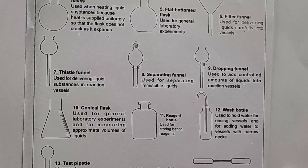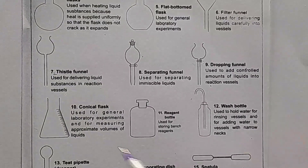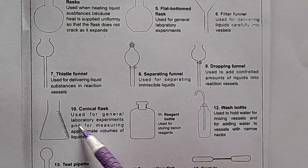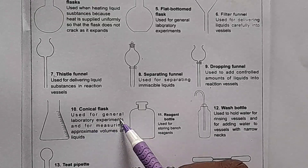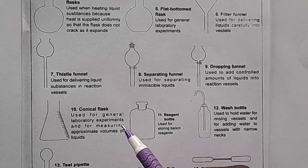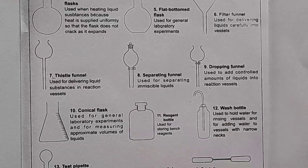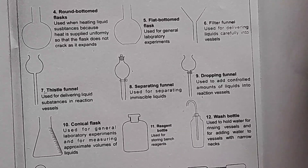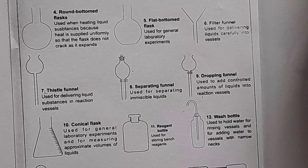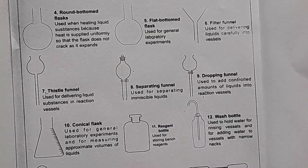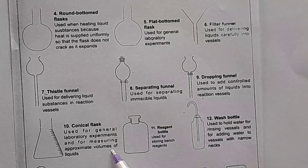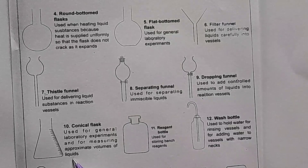Number ten, we are dealing with a conical flask. A conical flask is used for general laboratory experiments. On top of that, it is one of the apparatus used for approximate measuring of volumes of liquids — so also used for measuring approximate volume of liquids.